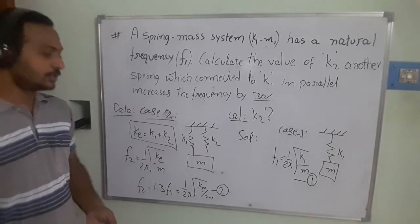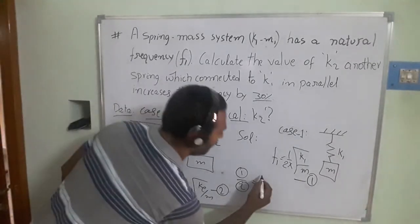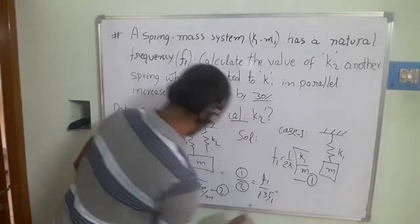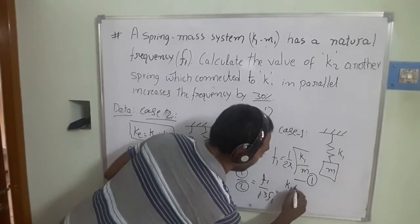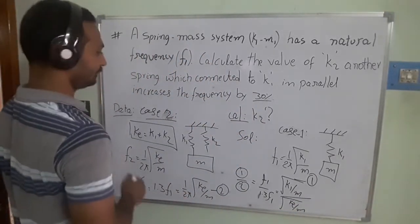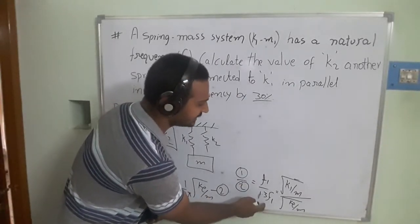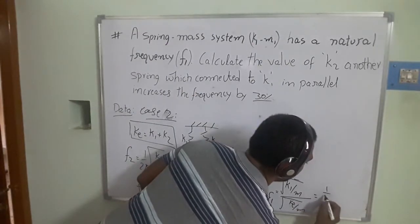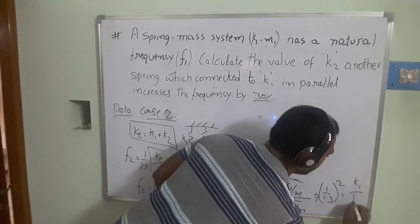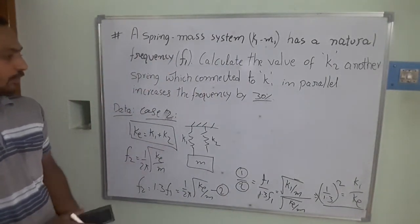Dividing equation 2 by equation 1: f1 / (1.3 × f1) = √(k1/m) / √((k1 + k2)/m). The (1/2π) and f1 terms cancel. Squaring both sides: 1/1.3² = k1/(k1 + k2), which gives 1/1.69 = k1/(k1 + k2), where k_eq = k1 + k2.